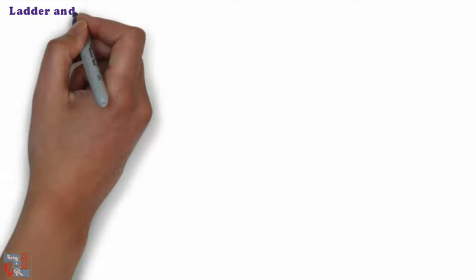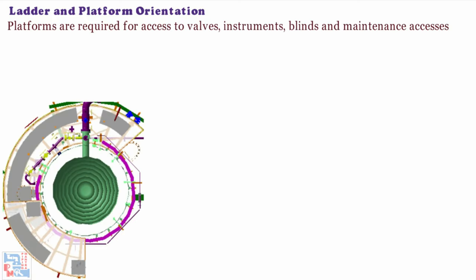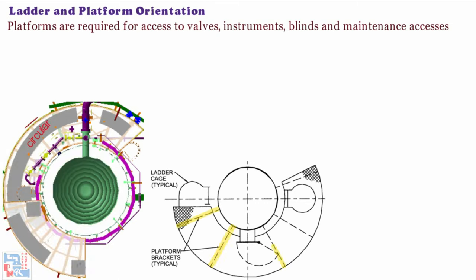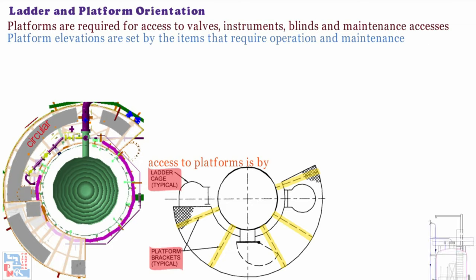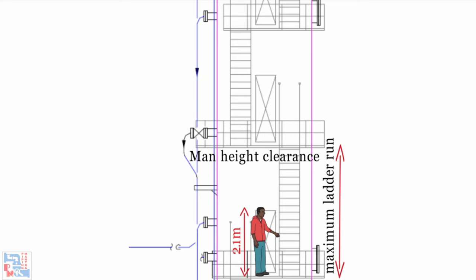Now let's discuss about ladder and platform orientation. Platform on towers are required for access to valves, instruments, blinds and maintenance accesses. Platforms are normally circular and supported by brackets attached to the side of the tower. Generally access to platforms is by ladder. Platform elevations for towers are set by the items that require operation and maintenance. Man height clearance should be checked from the structural member of the upper platform i.e minimum 2.1m. The maximum ladder run should not exceed 6m.